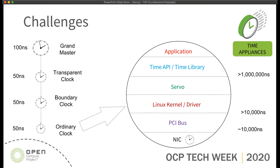The question was how can we propagate the time to the application better. We looked at a couple of options. First, we invested in phc2sys — a separate process that works like a servo and tries to set the oscillator on the node to be in sync with the NIC. The OS real-time clock is changed based on the NIC. We had a few tests that went to catastrophic failure, meaning the time went backward or jumped in the range of seconds.